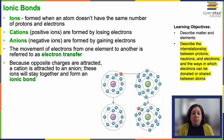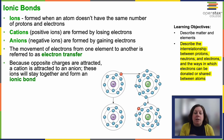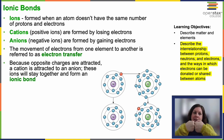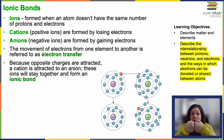The movement of electrons from one element to another is called electron transfer — when one atom donates or accepts an electron. Because opposite charges are attracted, a cation is attracted to an anion, and these ions stay together in an ionic bond — think of it like magnets, positive attracted to negative. A nice example is table salt, sodium chloride: sodium is a cation, chloride is an anion, and their opposite charges attract each other, holding them together in that ionic bond.